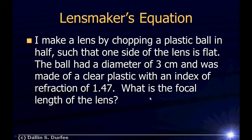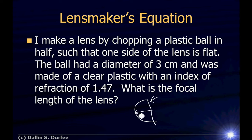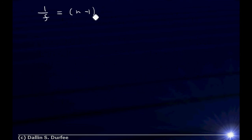Basically what we have is a ball that we've cut in half, so we have a flat side and a curved side. The radius was 3 centimeters and the index of refraction is 1.47. The lens maker's equation is: 1 over F equals N minus 1, times the quantity 1 over R1 minus 1 over R2.